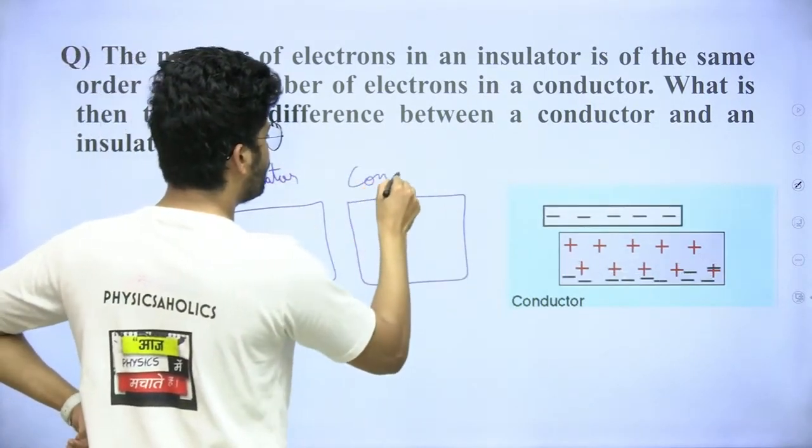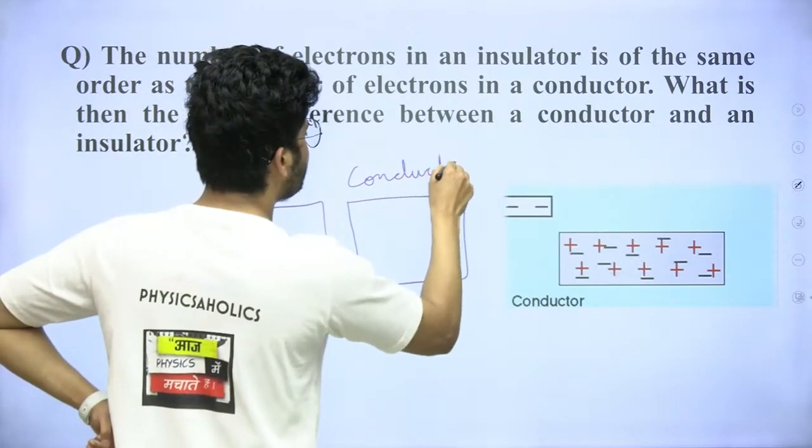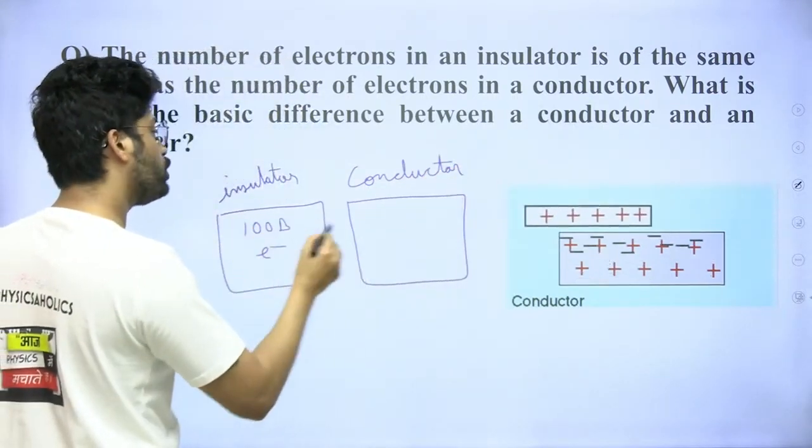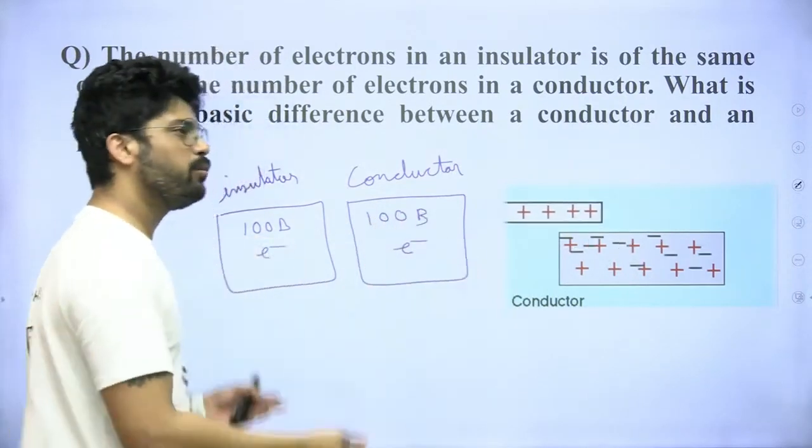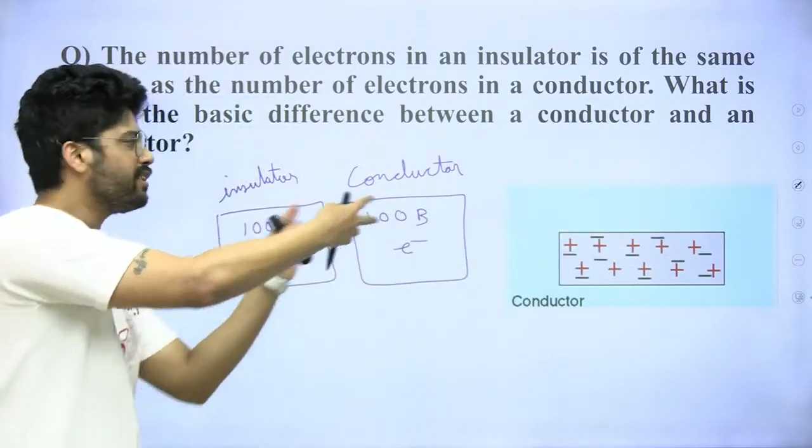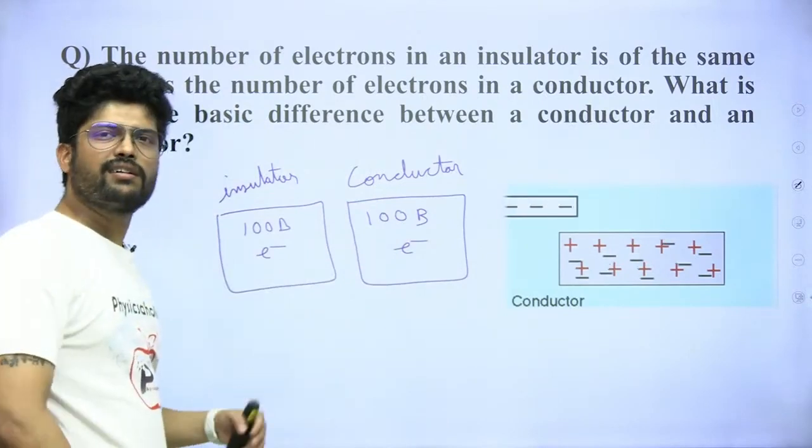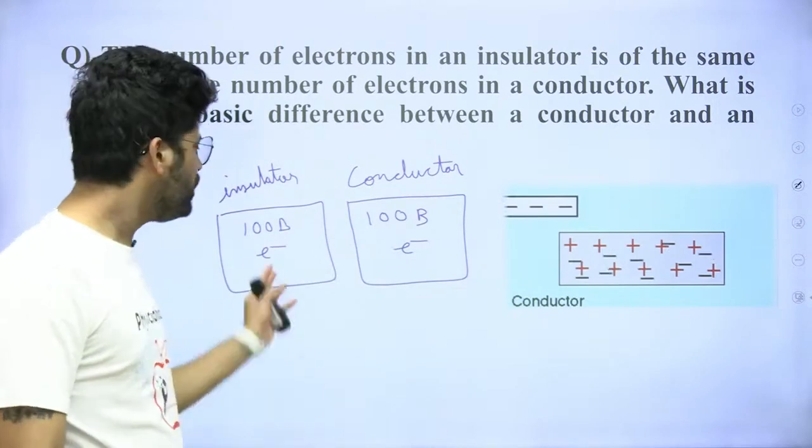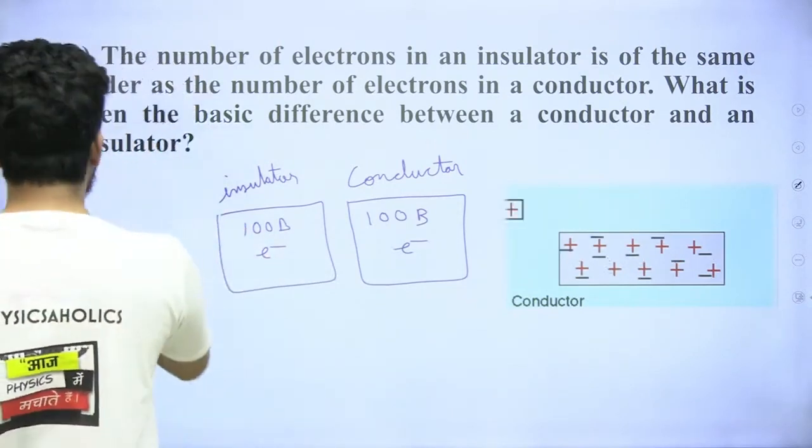When you think about a conductor, you have to consider that 100 billion electrons are of the same order. If you ask, if the current is not allowed, the charge is allowed. If the electrons are not allowed, then why not allow the electrons? If I am an ideal insulator,